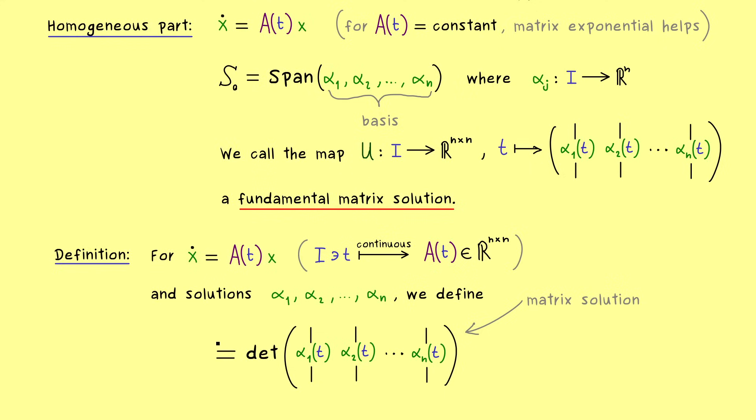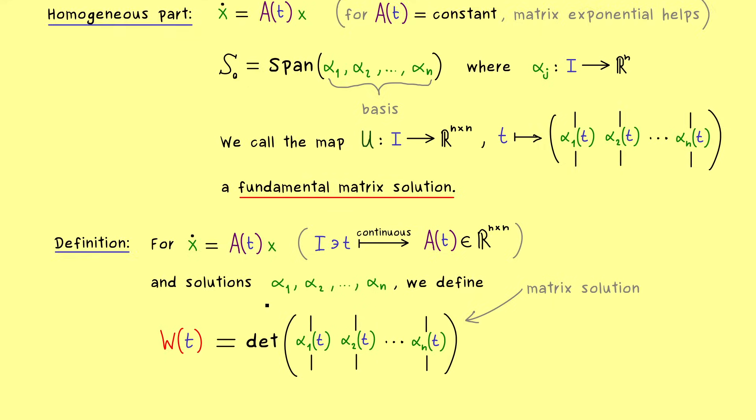Moreover, we also introduce a new symbol for this determinant. We write W. And unsurprisingly, this is what we call the Wronskian determinant with respect to our ODE and the chosen solutions.